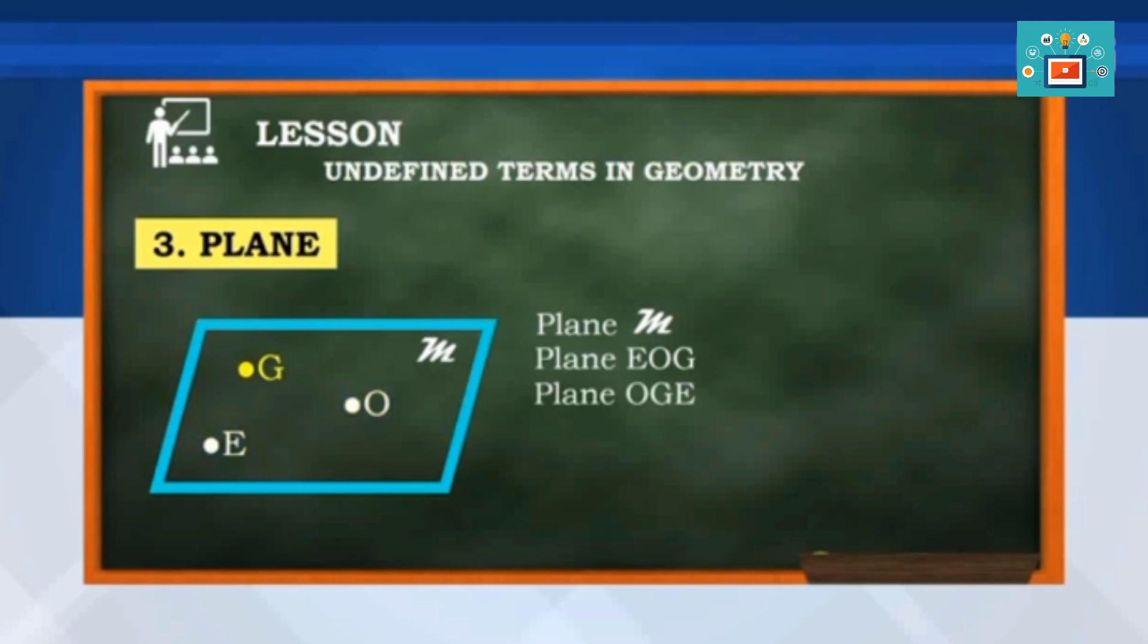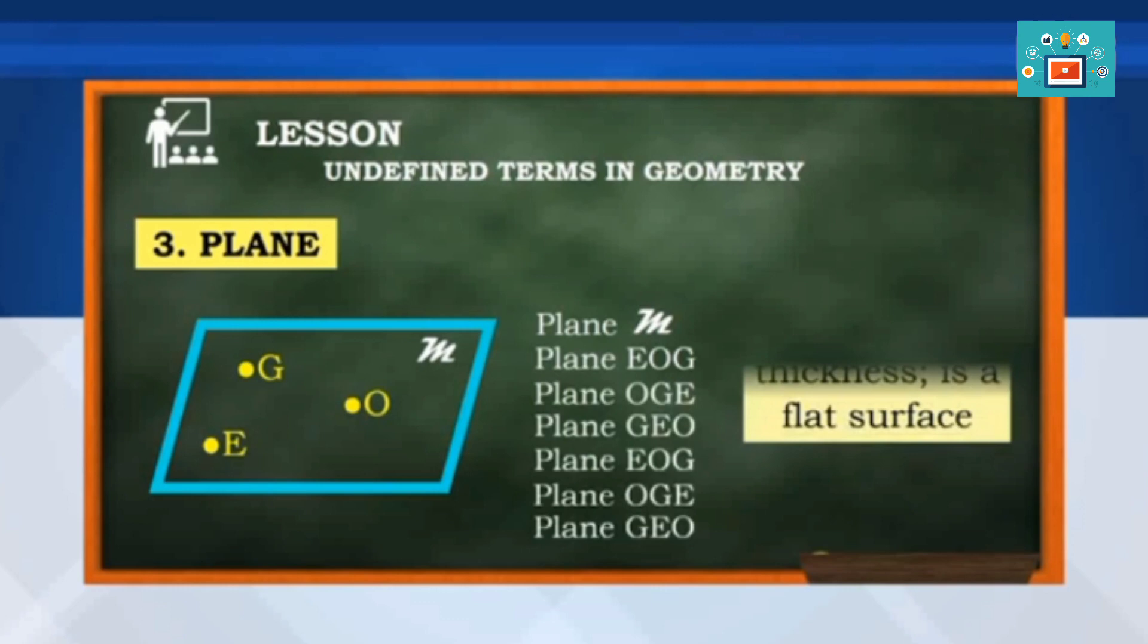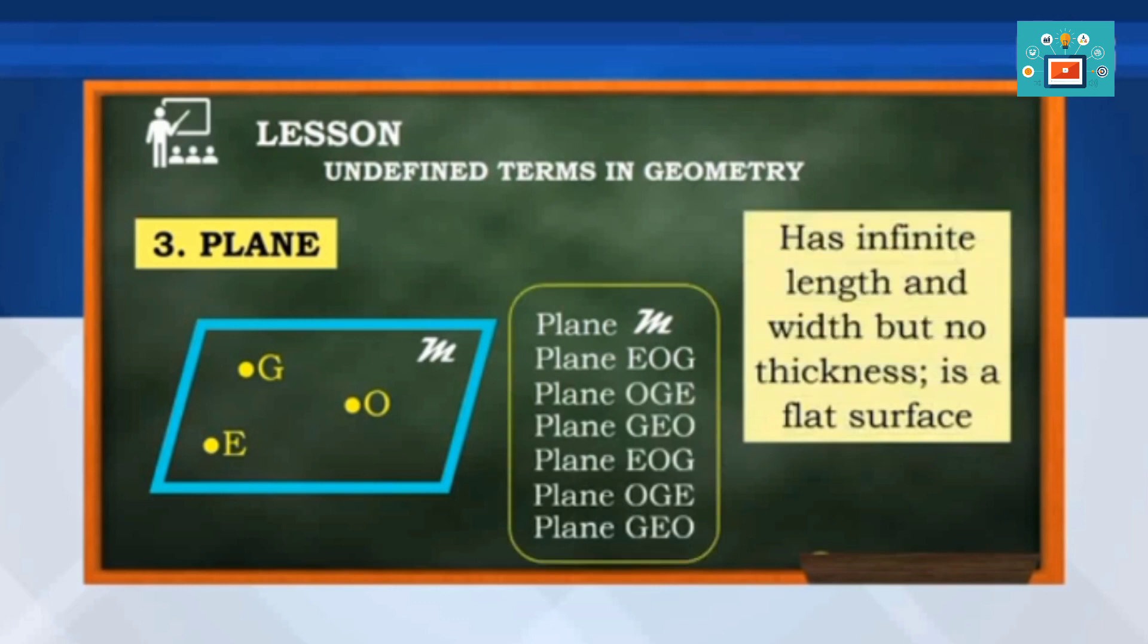Or by using at least three points that do not lie on the same line. So, we have plane EOG. Or plane OGE. Or plane GEO. And these are three more ways. It has infinite length and width but no thickness. And also, it is a flat surface. Take note that these names are just referring to one plane.